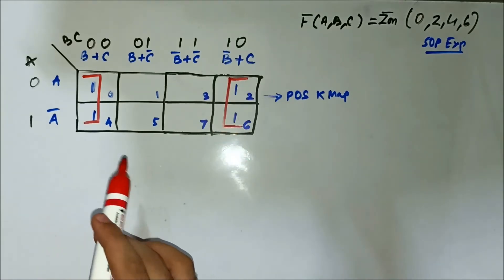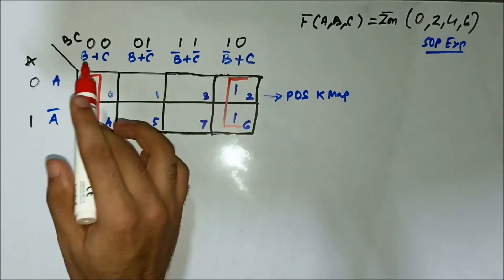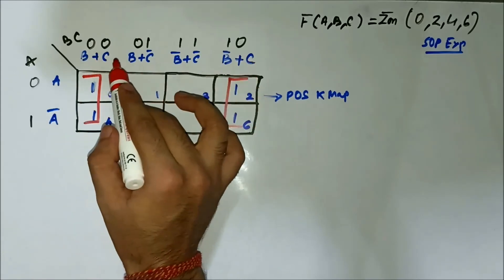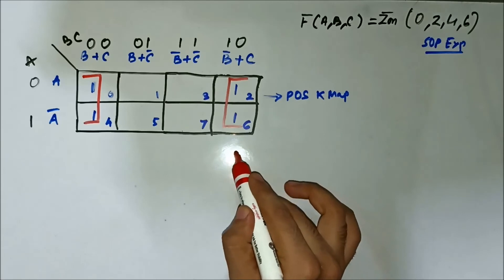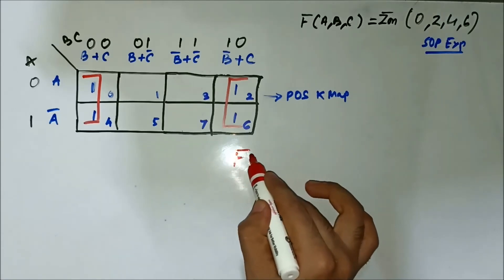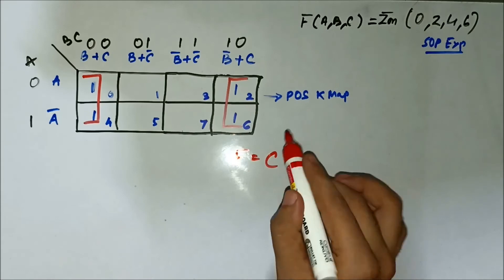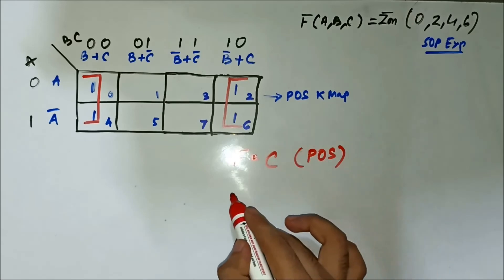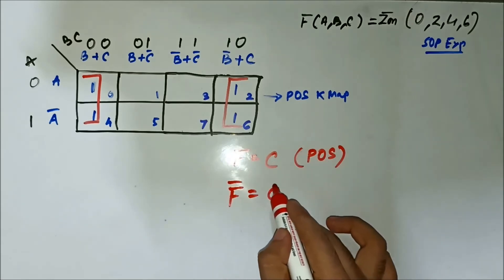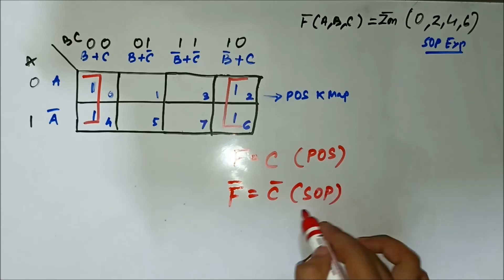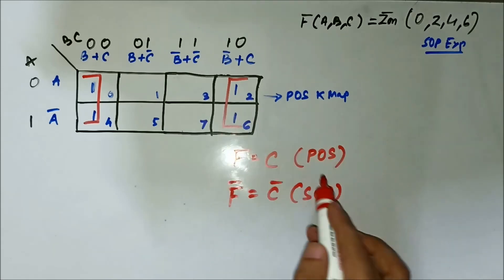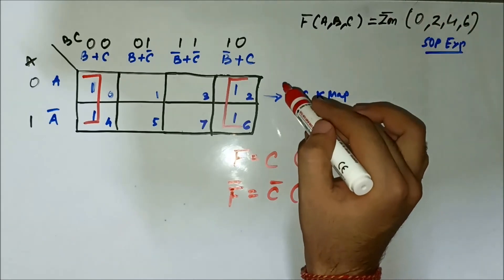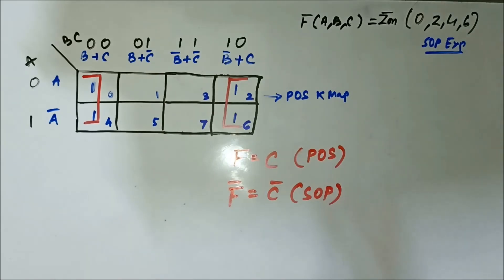With minterms 0, 2, 4, 6 mapped, a quad is formed from these two adjacent cells and these two adjacent cells. Identifying common variables: nothing is common in the horizontal side, but in the vertical side C is common in all four cells. So F equals C — but this is the POS expression. To get the SOP expression we complement it: F equals C-bar. This is the SOP form, completing the second question.